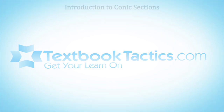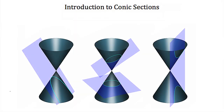This tutorial is an introduction to conic sections. A conic section is just the shape that's created when you intersect a cone with a flat plane. Imagine an ice cream cone and a piece of paper sliding through the center of it. The shape where those two objects touch is different depending on what angle the plane passes through the cone. Possible shapes we can form are a parabola, a circle, an ellipse, or a hyperbola.